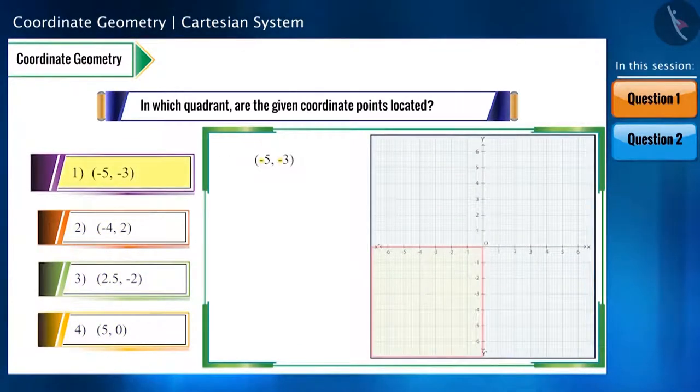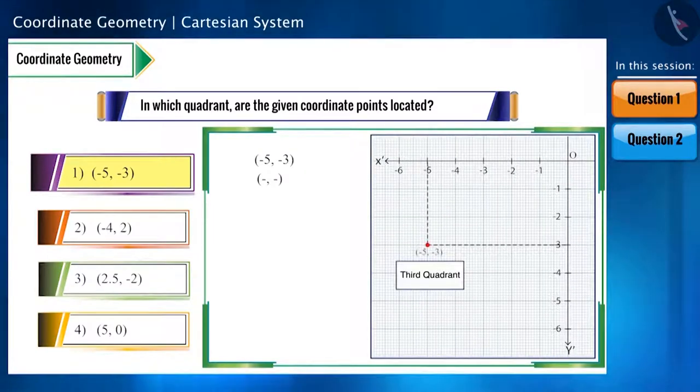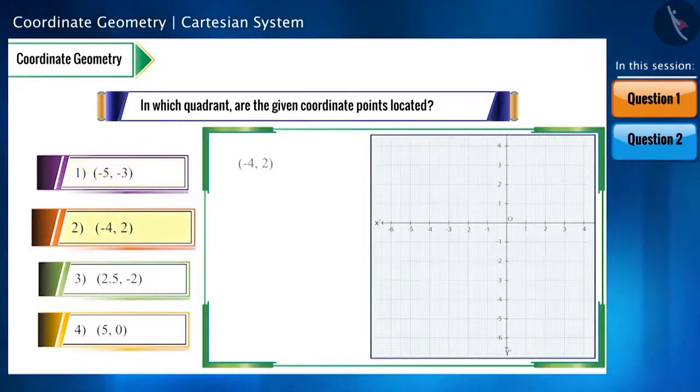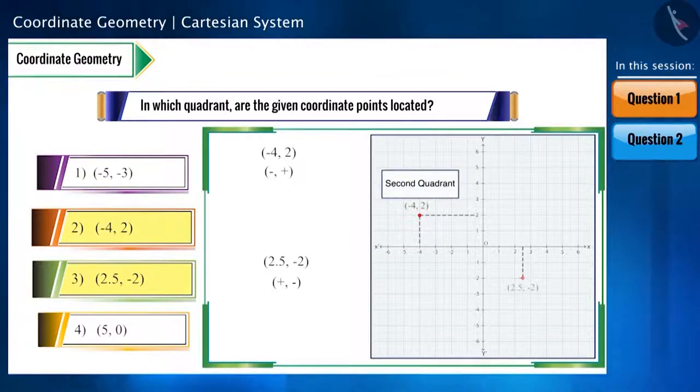The sign of the first option reflects the third quadrant, minus minus. That is, this point is located in the third quadrant. Similarly, the second and third option will be in the second and fourth quadrants respectively.